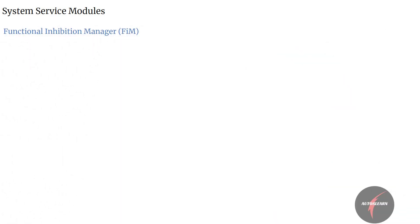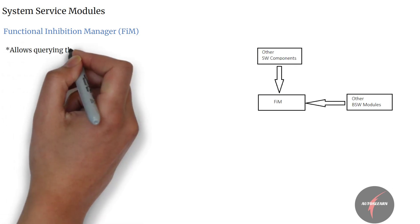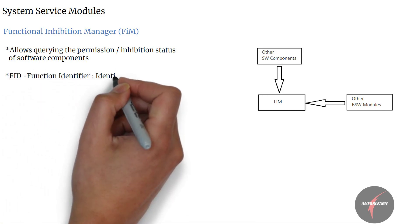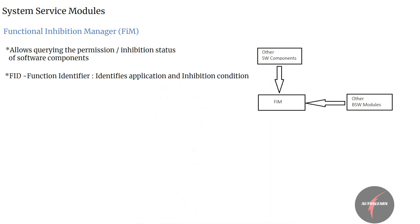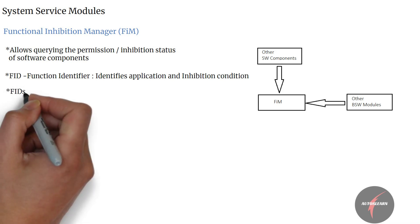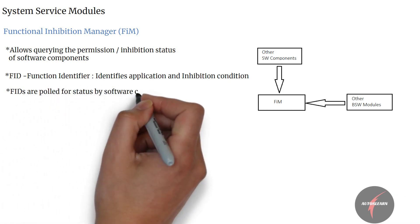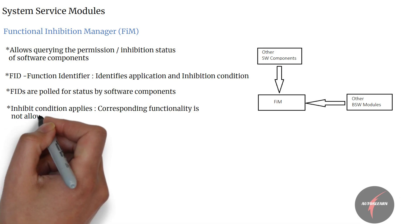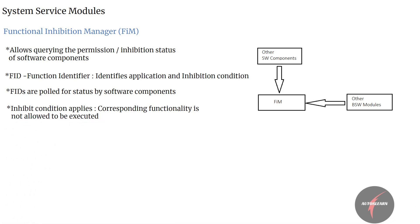Next we have the Functional Inhibition Manager (FIM). The FIM allows varying the permission or inhibition status of software components and their functionality. In the FIM context, an FID (Functional Identifier) identifies an application functionality along with its inhibition conditions. Functionalities poll for the permission state of their FIDs before execution. If an inhibition condition applies for a particular identifier, the corresponding functionality is not allowed to be executed. These inhibitions can be configured and even modified by calibration.